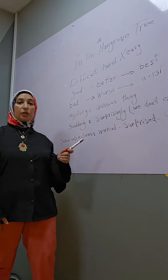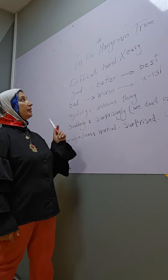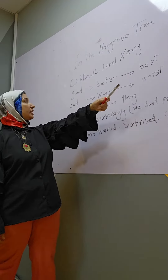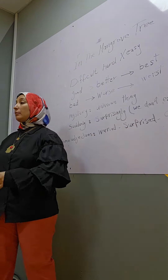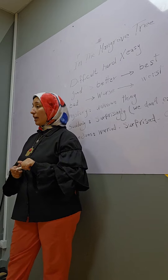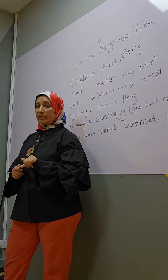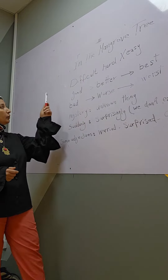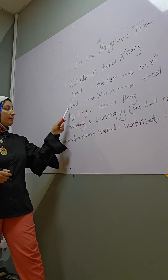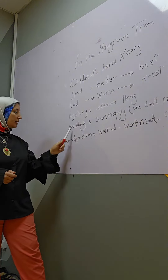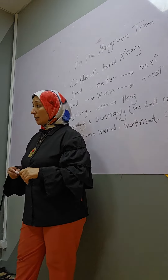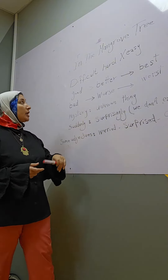We move on to the next lesson which is 'In the Mangrove Tree.' We got some words — let's introduce them together because we're going to have a different dictation. We got the words: difficult, good, bad, mystery, suddenly, and some adjectives we're going to talk about.